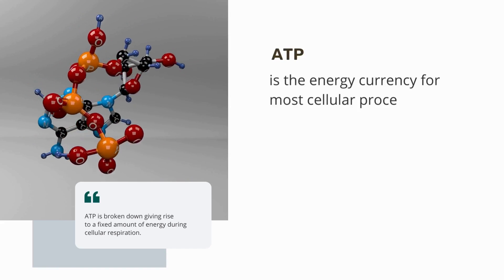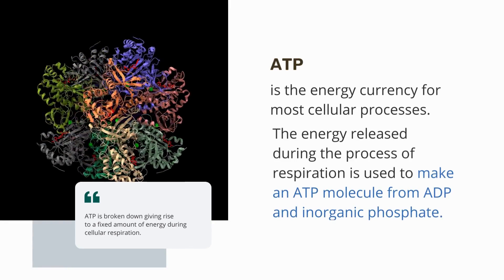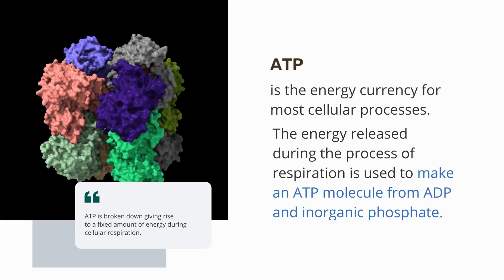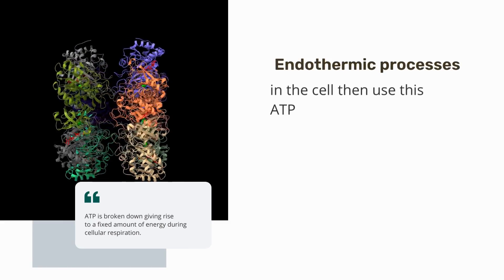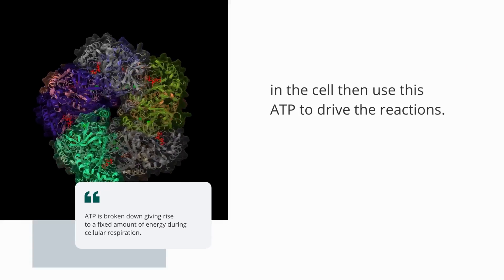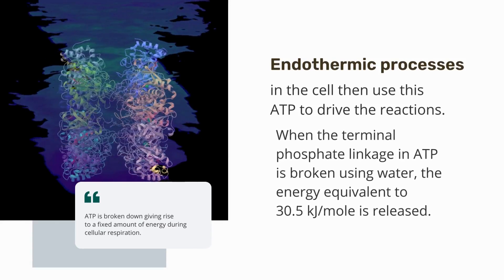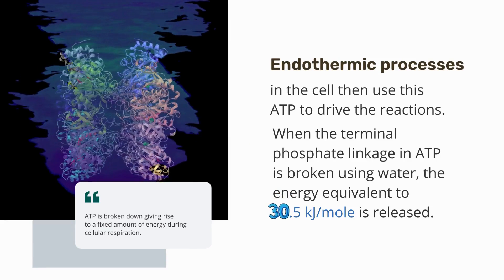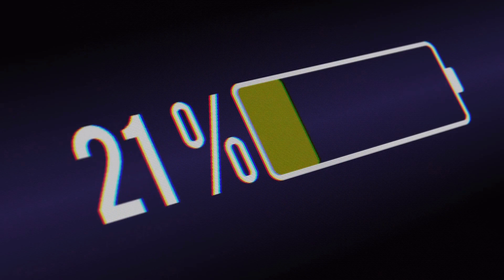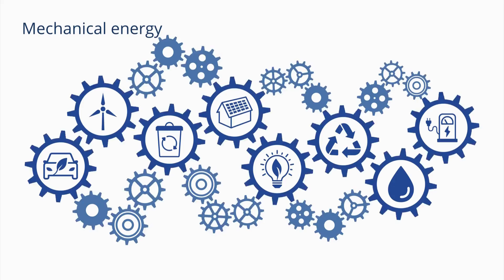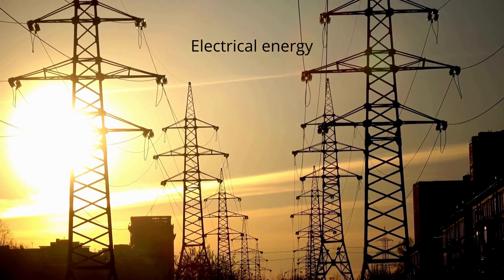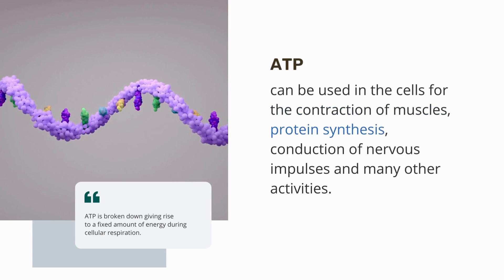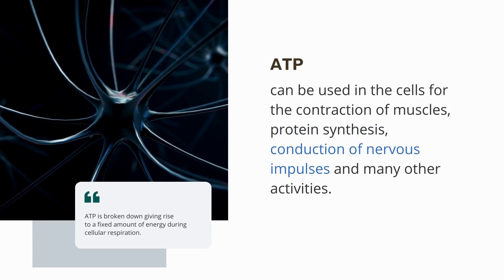ATP is the energy currency for most cellular processes. The energy released during respiration is used to make an ATP molecule from ADP and inorganic phosphate. Endothermic processes in the cell then use this ATP to drive reactions. When the terminal phosphate linkage in ATP is broken using water, energy equivalent to 30.5 kilojoules per mole is released. Just like a battery provides energy for many uses — mechanical, light, electrical — ATP can be used for muscle contraction, protein synthesis, conduction of nerve impulses, and many other activities.